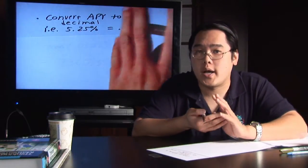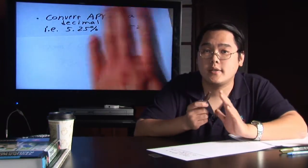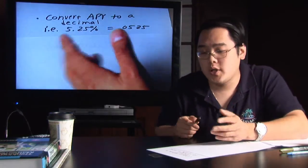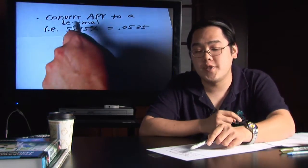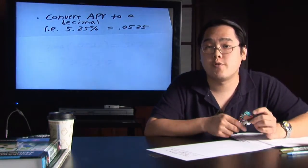But once you have your APY, it's very important that you know how to convert it to a decimal, and that is take the number they give you and shift it to the left two places. So for example, if you have an APY of 5.25%, move the decimal to the left two places and you will get .0525.